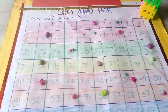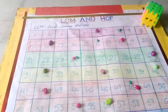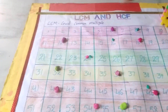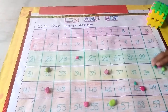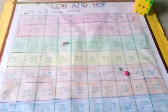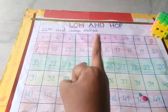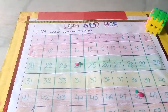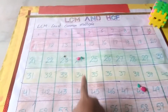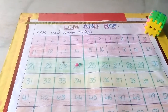Now let us observe — what is the LCM? LCM means Least Common Multiples. Let us observe the common multiples of 6 and 8. What are the common multiples? Where are the two stones located? Those numbers are the common multiples. Let us remove the single number stones. We get two common multiples: 24 and 48. Least means smallest, so the least common multiple is 24. LCM of 6 and 8 is 24.